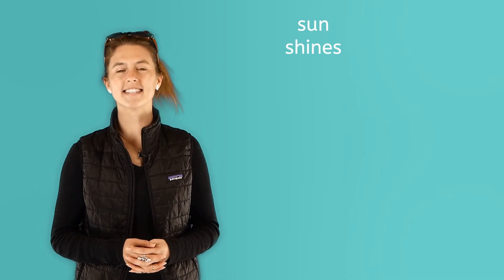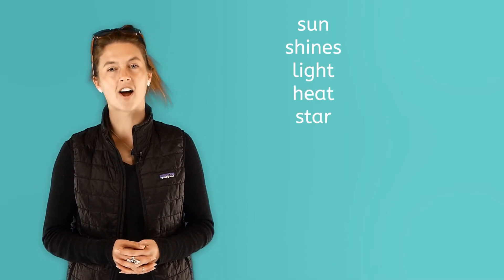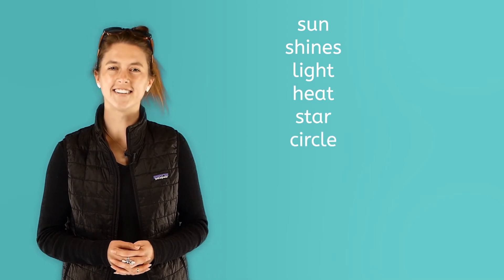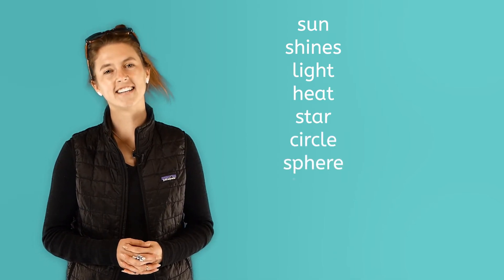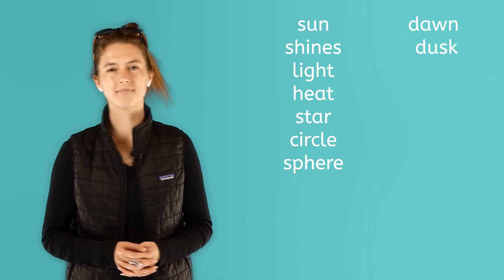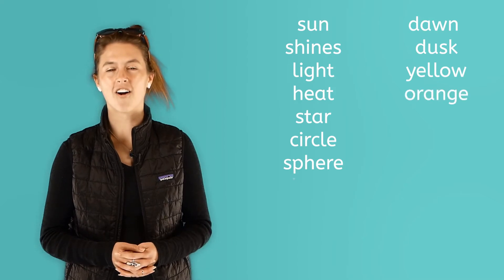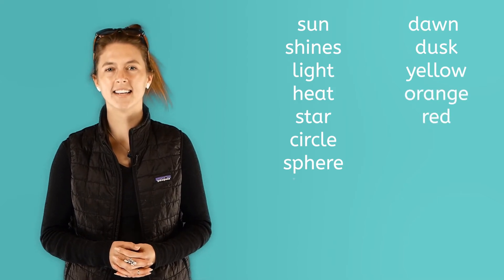Let's review all 11 words we've learned about our sun. Sun, shines, light, heat, star, circle, sphere, dawn, dusk. Colors, yellow, orange, red, sunlight.